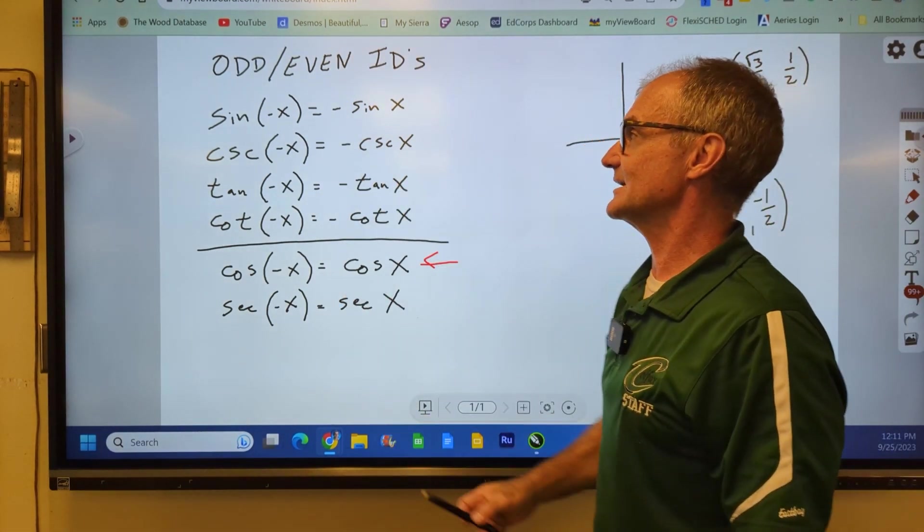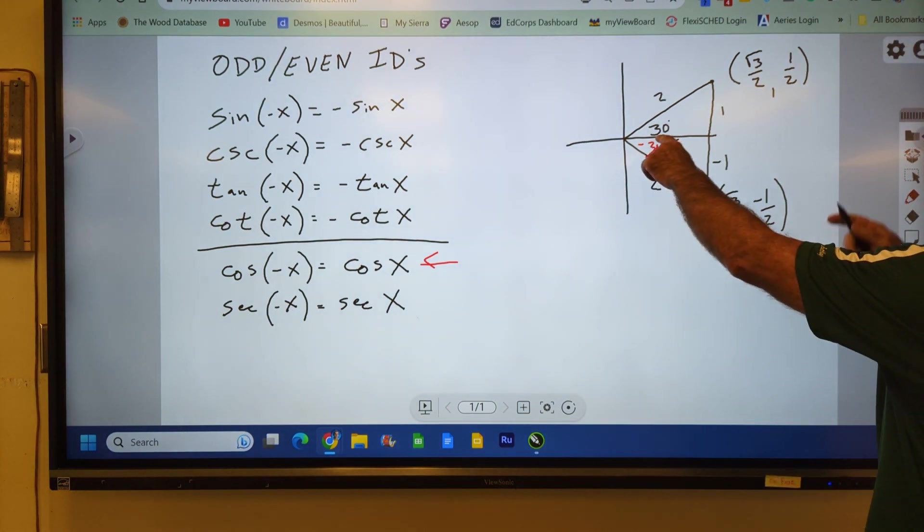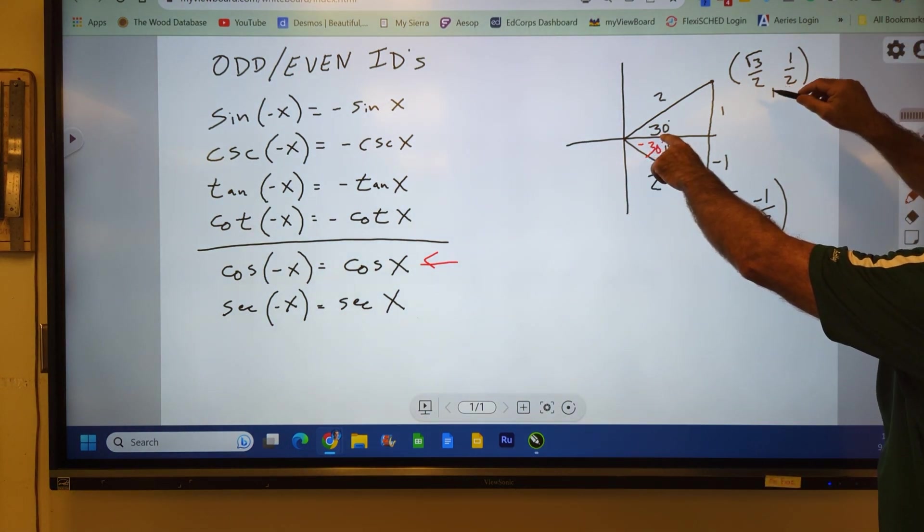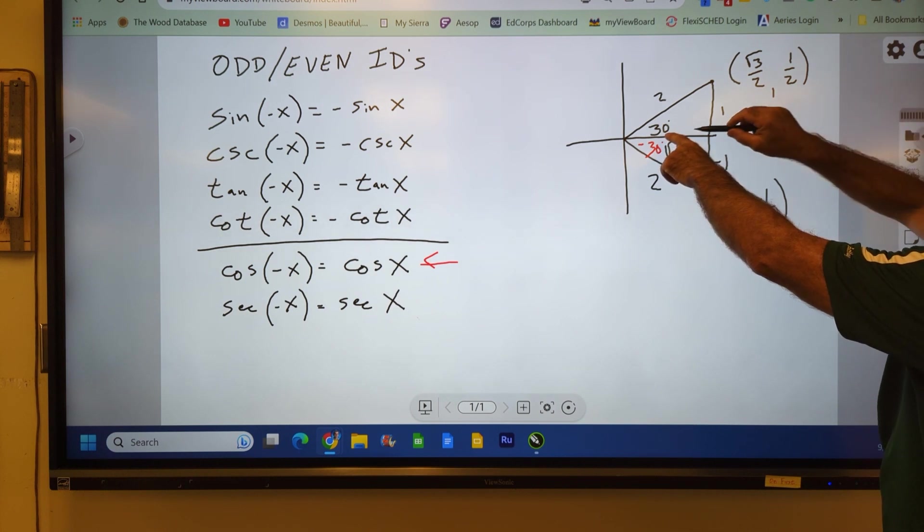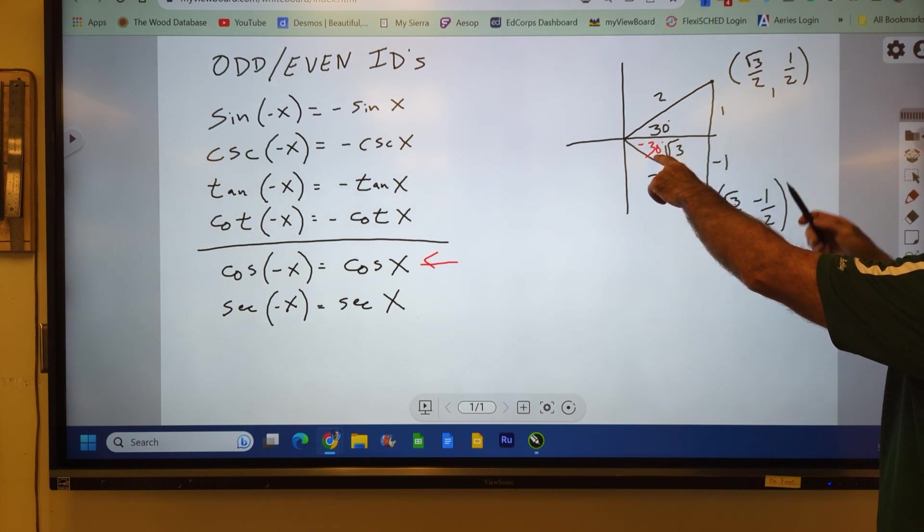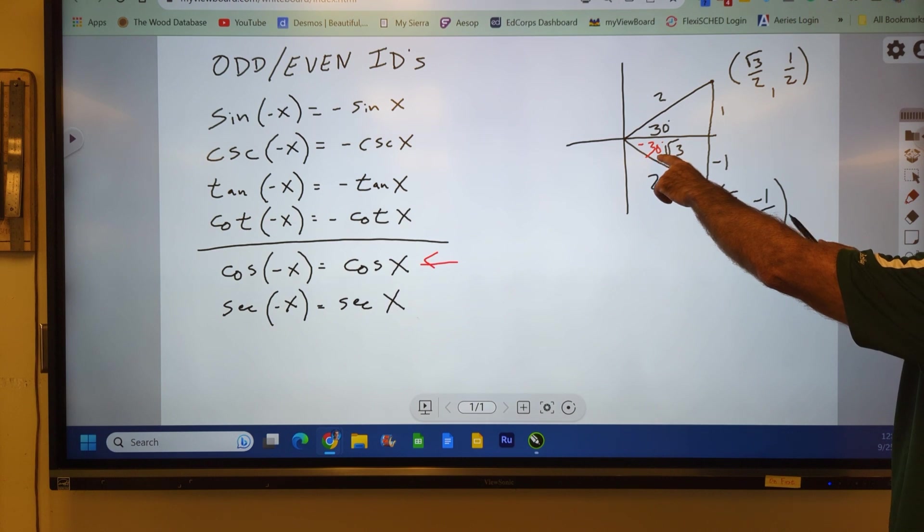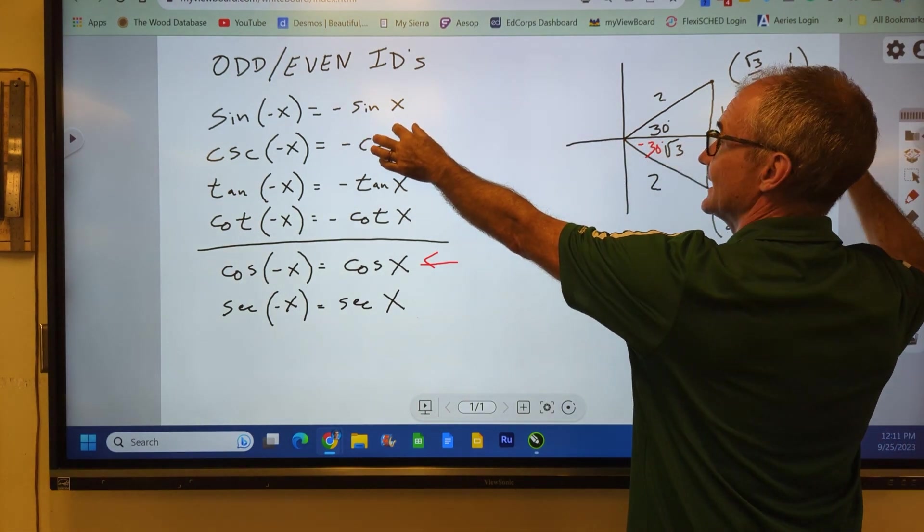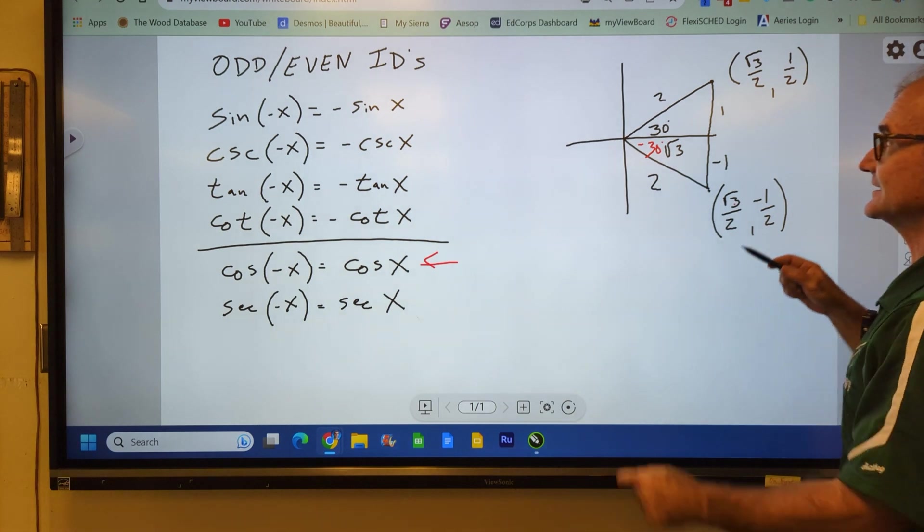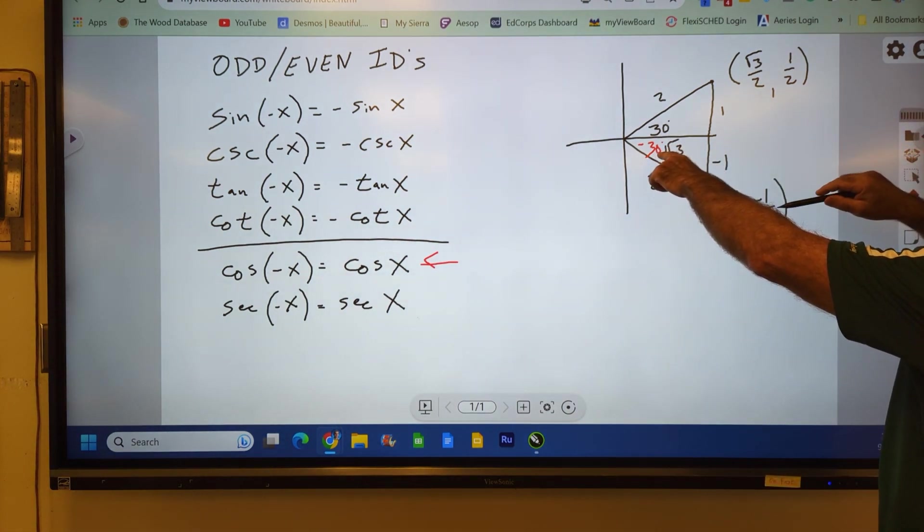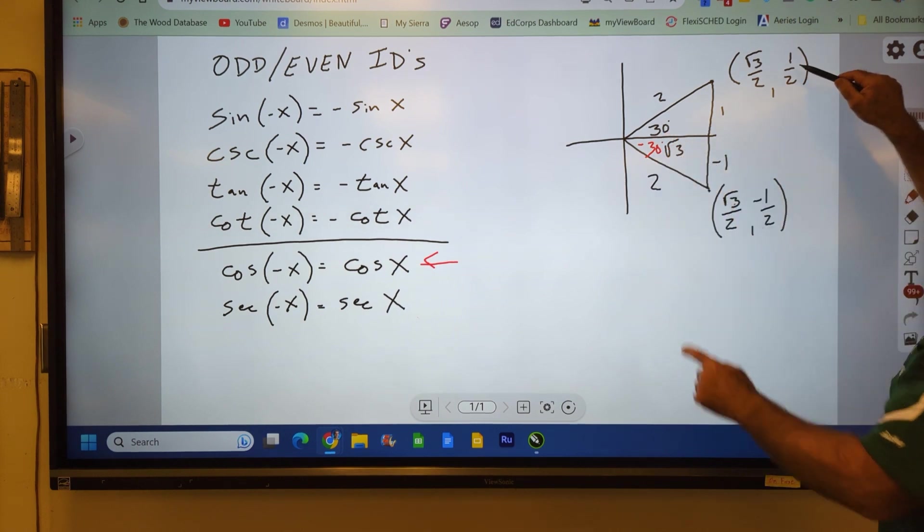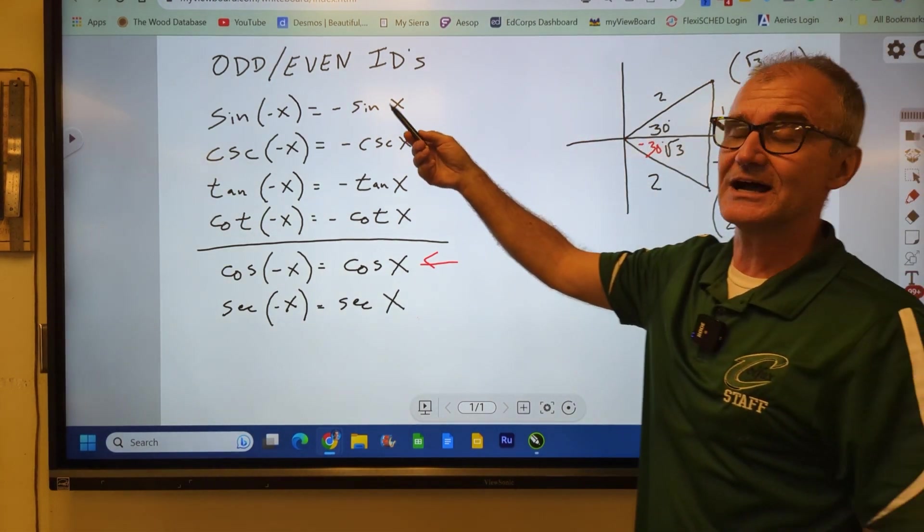Let's take a look at sine of negative x. Sine of x, remember the first term is going to be cosine. Second term, sine. So sine of negative 30 degrees is going to be negative 1 half. Or if I do the sine of 30 degrees, 1 half, multiply it by a negative. Sine of negative x is negative 1 half versus sine of x would be 1 half. So that's why these are odd identities.